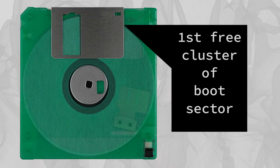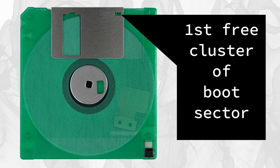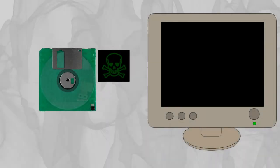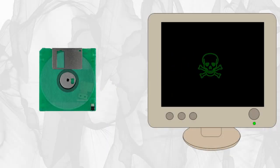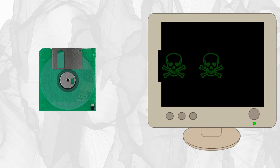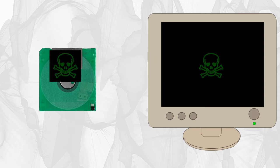The ping pong virus hid in the boot sector of floppy disks, just like the stoned virus. The virus would mark the 1st free cluster as a bad sector, causing MS-DOS to avoid writing to that disk cluster. Once the computer is booted, the virus becomes memory resident. Once memory resident, any attempt to override the boot sector will cause the virus to reinfect the disk.